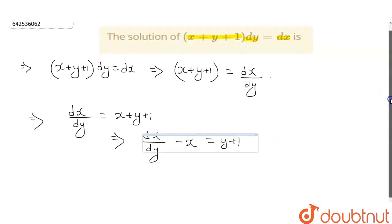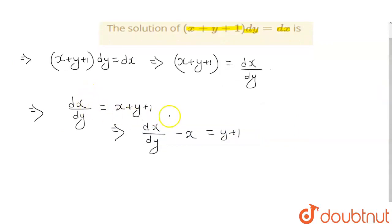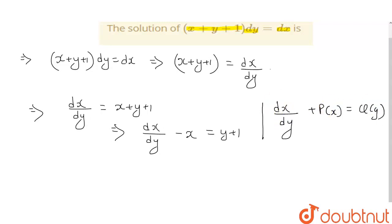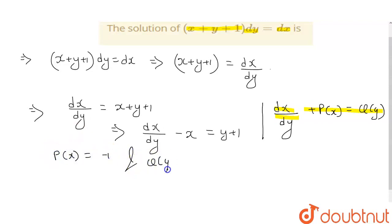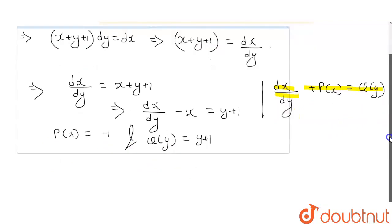This is the linear differential equation whose general form is dx/dy + P(x) = Q(y). Here we can identify P as minus 1 and Q(y) as y + 1. So first, we have to find the integrating factor.